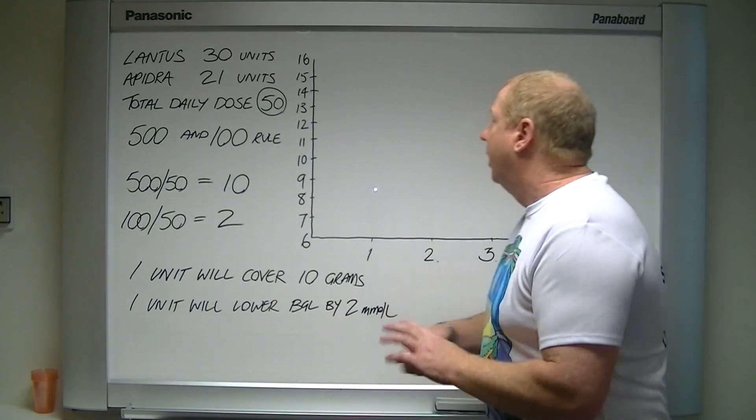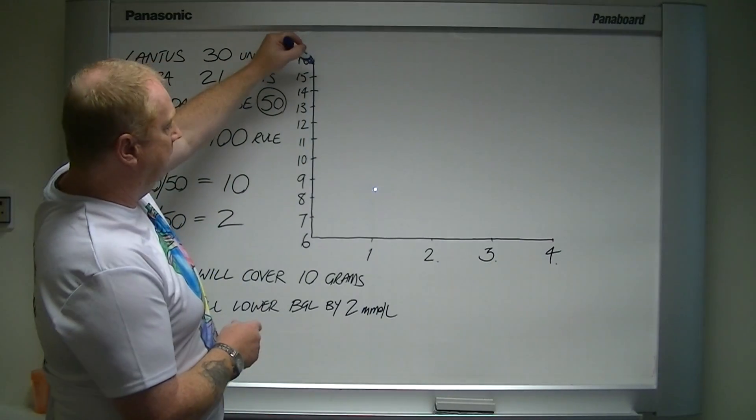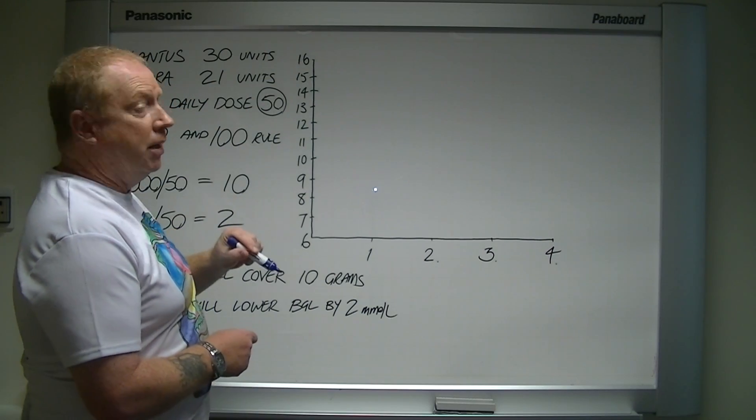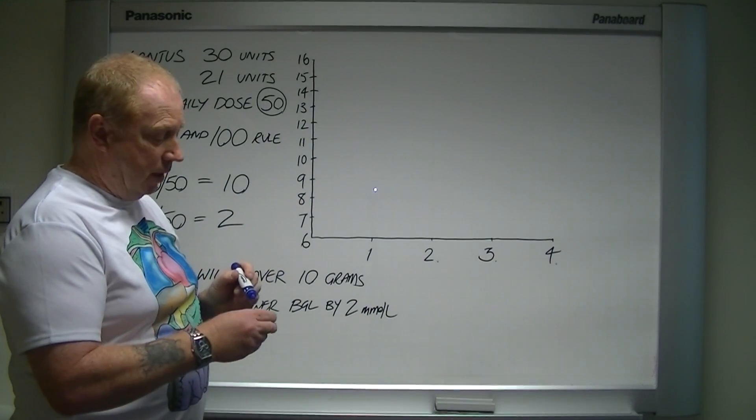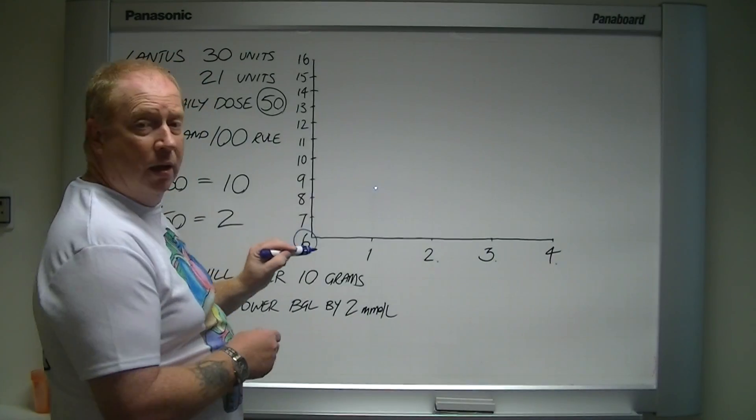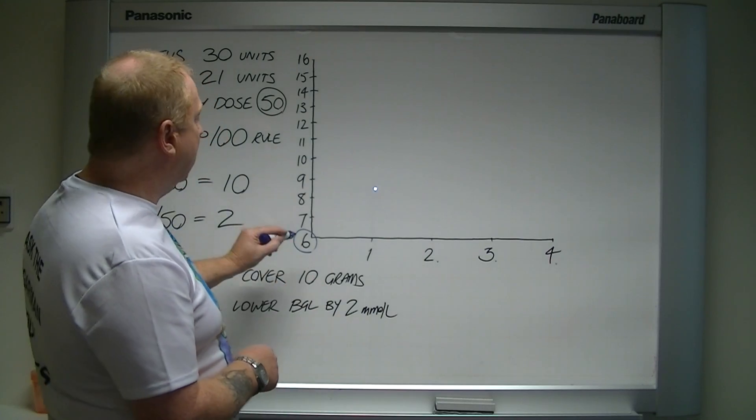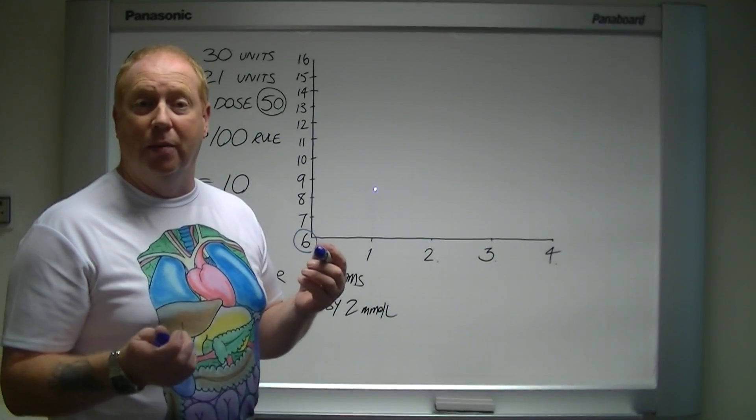For example, if I have a blood glucose level of 16, let's say before lunch, then I simply want to do a quick calculation. So if I'm 16, I want to be 6, my target. Because I want to be 6 millimoles, I don't want to be below 6. So I want to correct the difference between 6 and 16, which is 10 millimoles.